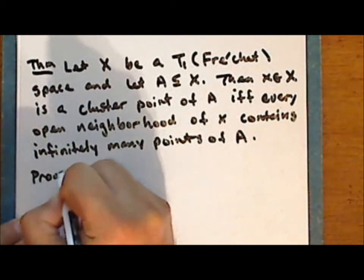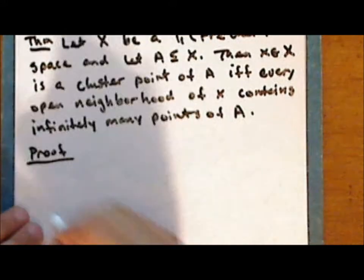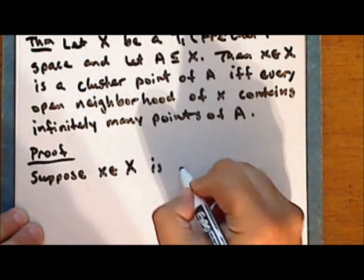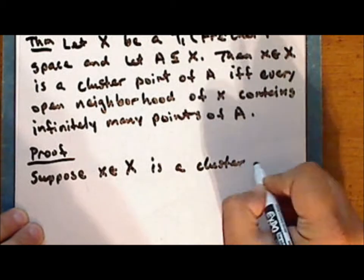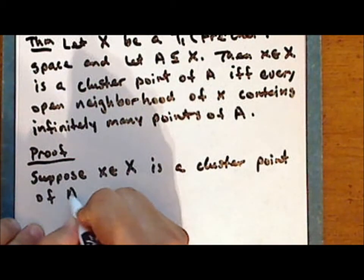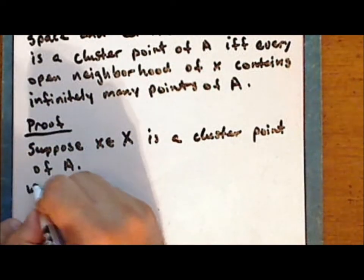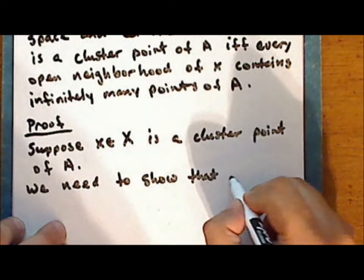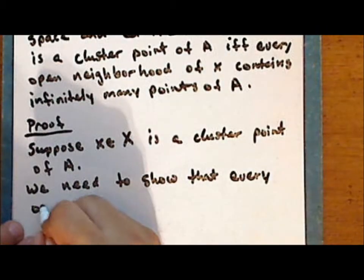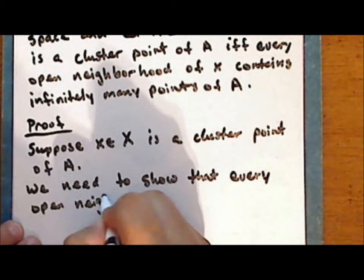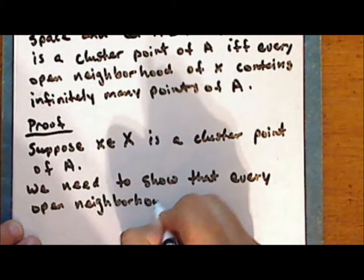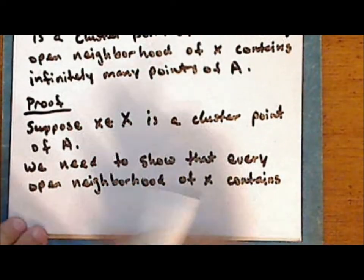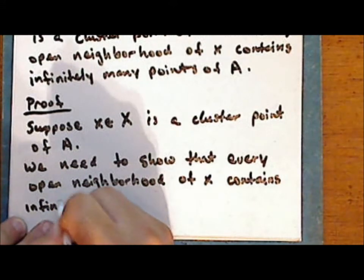Proof. Suppose that the point X in the space X is a cluster point of the set A. We need to show that every open neighborhood of the point X contains infinitely many points of the set A.